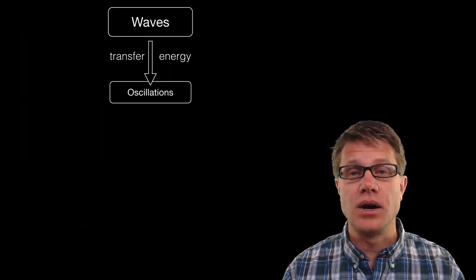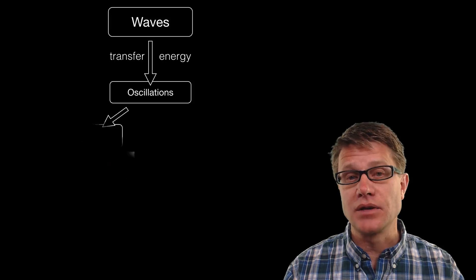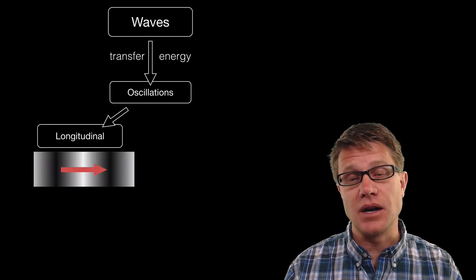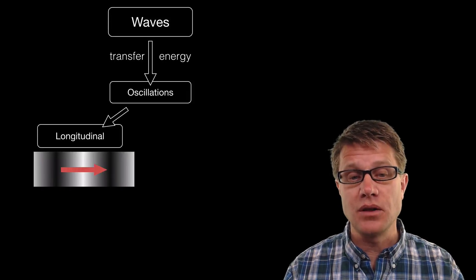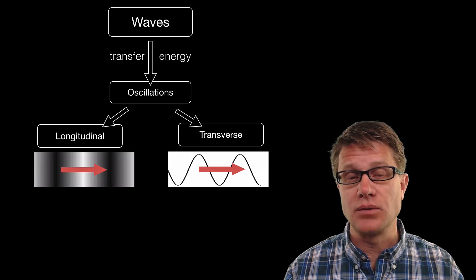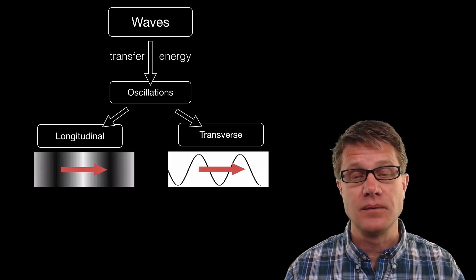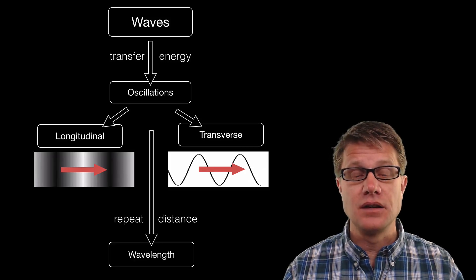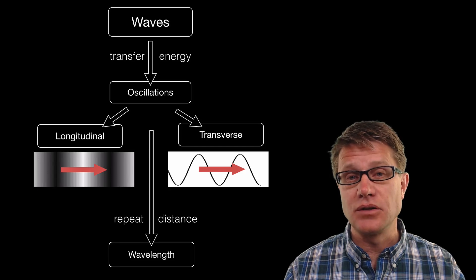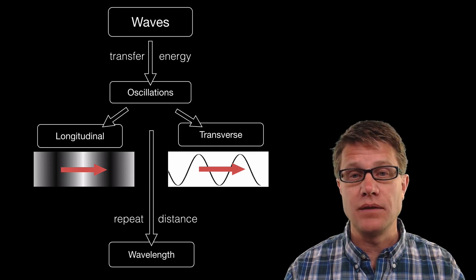Waves transfer energy through oscillations. Those waves can either be longitudinal—that is when the oscillations are in the direction of the movement of the wave—or they can be transverse, when the oscillations are perpendicular. In either case, the distance or the repeat distance between those oscillations is going to be the wavelength.